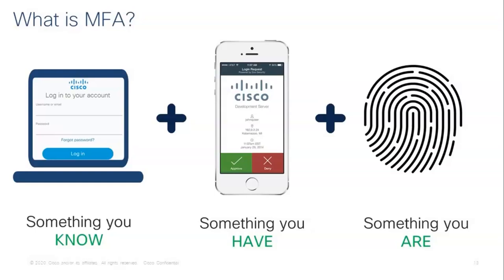The most common example of MFA is accessing an ATM at a bank — to gain access to your data and accounts, the user must insert a physical card (something they have) and enter a PIN (something they know), unless they share it with others. This is a familiar real-world model of multi-factor authentication.